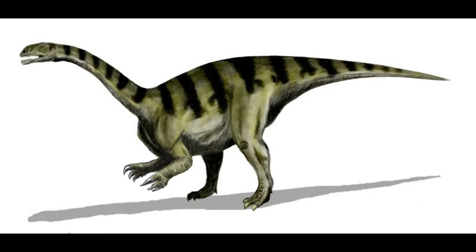Metatherians — the group including modern marsupials — also diversified during the Cretaceous. Fossils of early Metatherians such as Sinodelphys show adaptations for a marsupial mode of reproduction. Some mammals, like Repenomamus, were large enough to prey on small dinosaurs, demonstrating the potential for mammals to occupy various trophic levels. Multituberculates continued to thrive as herbivores with complex teeth adapted for processing plant material, setting the stage for rapid expansion following the end-Cretaceous mass extinction.